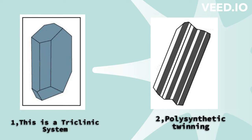All members of the plagioclase series crystallize in the triclinic system. Crystals are commonly tabular parallel to 010. Repeated twinning — or twinning looking like zebra stripes — called polysynthetic twinning parallel with 010 is extremely common and is sometimes visible in hand specimen. The hardness of plagioclase feldspars is close to 6. The density increases with calcium content, from 2.62 for albite to 2.76 for anorthite. Plagioclase can be colorless, white, or gray. A beautiful play of colors called labradorescence is seen in some plagioclase crystals.